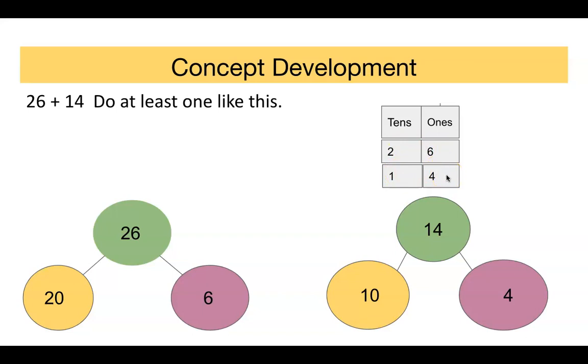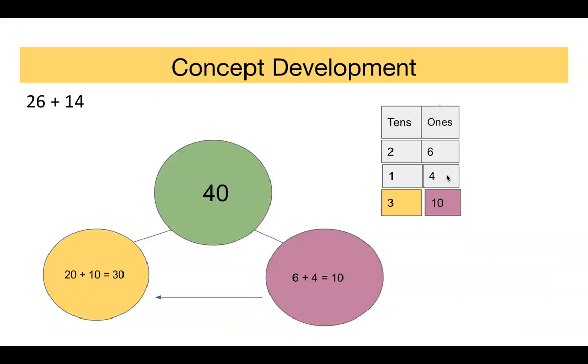Now we're adding them together. So we get 20 plus 10 equals my 30 or my three tens. Six plus 4 equals 10. That's a group of 10. So I have three tens and I have 10 ones. Showing the arrow over. We change it. It becomes 40 because we have one more group of 10.